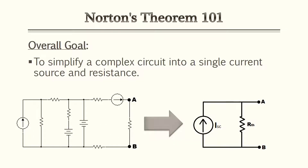The overall goal of Norton's theorem is to simplify a complex circuit into a single current source and resistance. As you see in the illustration, we have a very complex arrangement of branches and sources on the left, and on the right we simplify it down to a single current source and a single resistance, which we'll do in the later exercises.